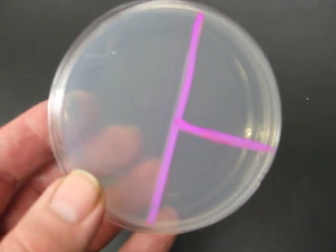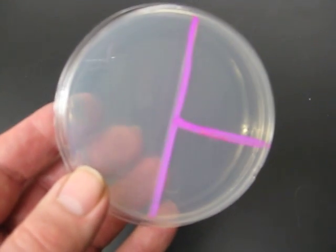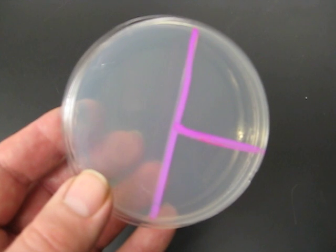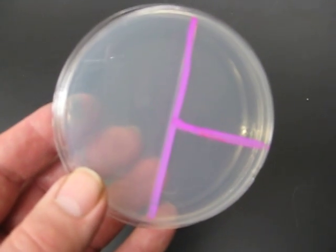Going back to the beginning, it can be handy to draw some lines on the bottom of the plate to delineate the three phases of our streaking process.